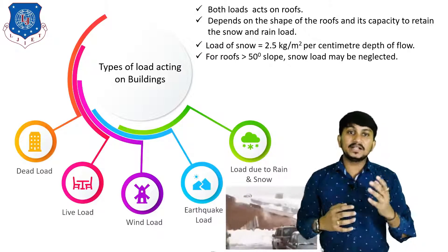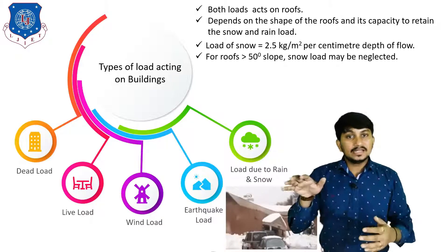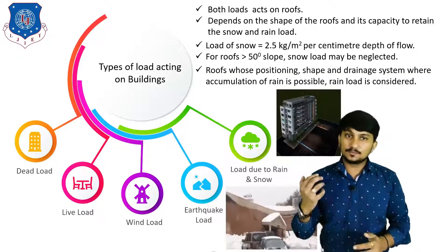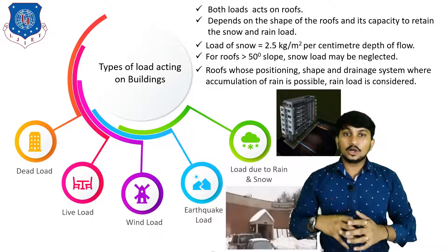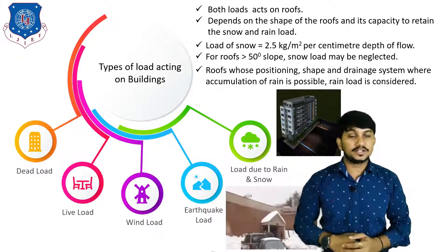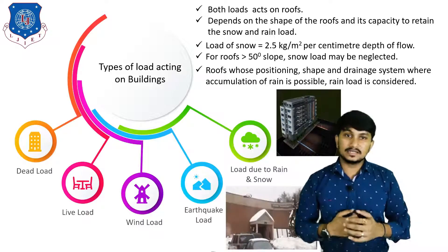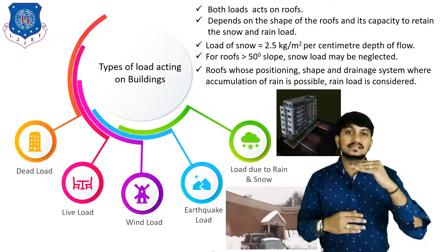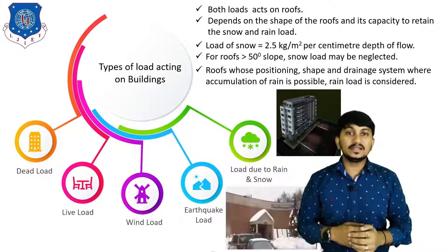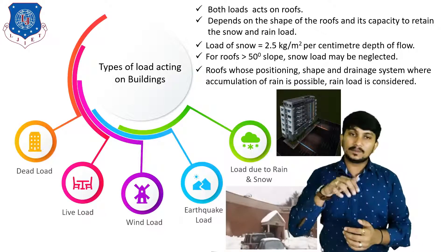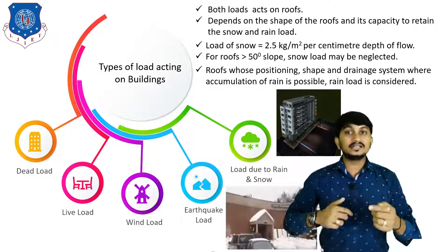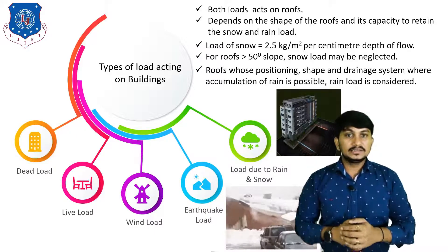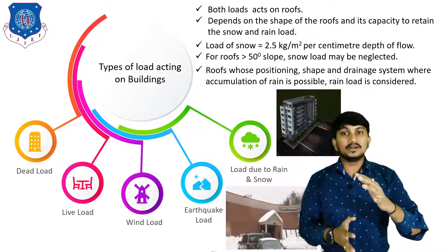For roofs with greater than 50-degree slope, snow load can be neglected because snow cannot be retained on a sloped roof. For roofs positioned in shade or with drainage systems where accumulation of rain is possible, rain load is also calculated. We apply snow load or rain load on the terrace slab. If live load is greater than rain and snow load, then live load is applied. If snow or rain load is greater than live load of the slab, then rain or snow load is applied on the terrace slab.